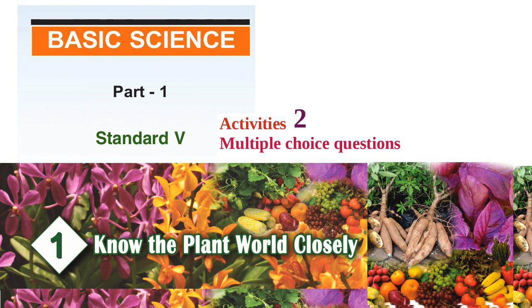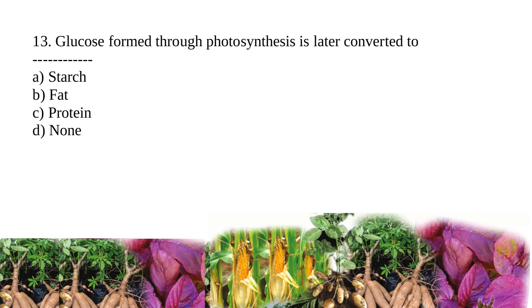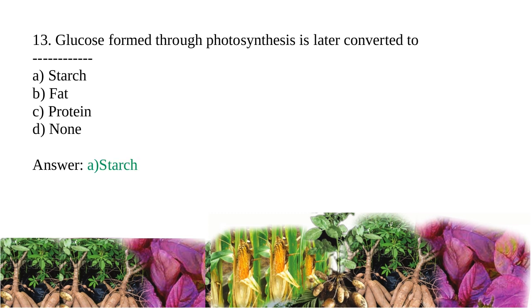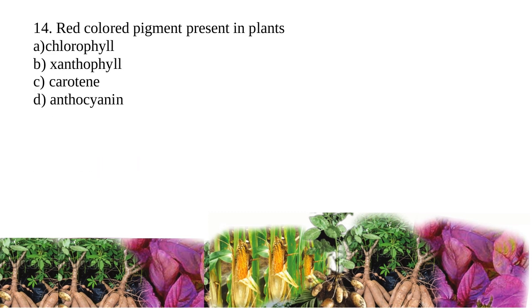Basic science standard 5, activities 2, multiple choice questions. This belongs to lesson 1. Question: glucose formed through photosynthesis is later converted to — starch, fat, protein, or none? The answer is starch. Question 14: red colored pigment present in plants —